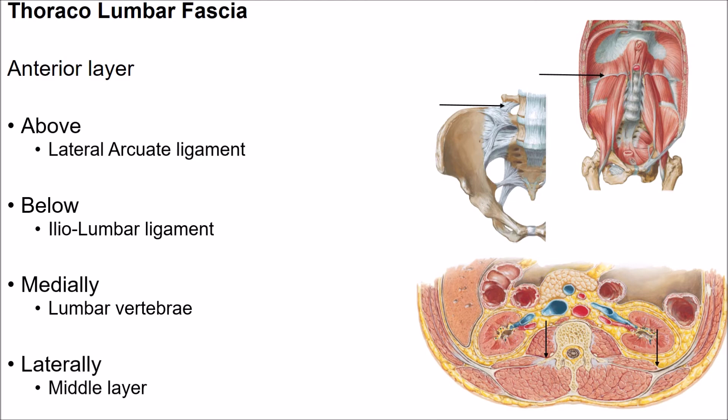Laterally, the anterior layer of the thoracolumbar fascia blends with the middle layer of the thoracolumbar fascia along the lateral border of the quadratus lumborum muscle.